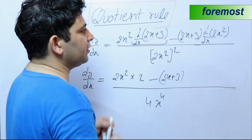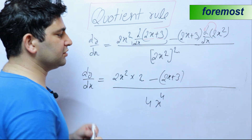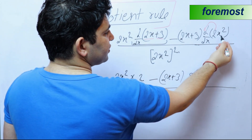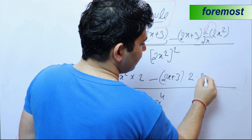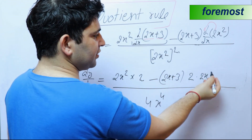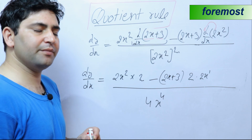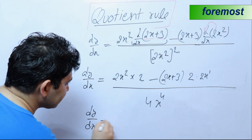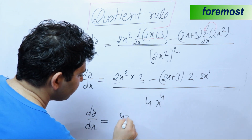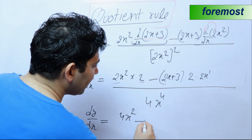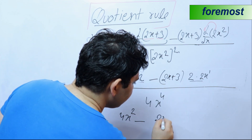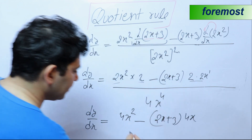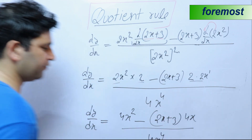For the differentiation of 2x squared: 2 is a constant and comes outside the differentiation, so we write 2 into d/dx of x squared. Differentiation of x squared is 2x raised to power 2 minus 1, which is 2x raised to power 1. So finally, dy upon dx is equal to 2 into 2 giving 4x squared, minus 2 into 2x plus 3 into 4x, whole divided by 4x to the power 4.